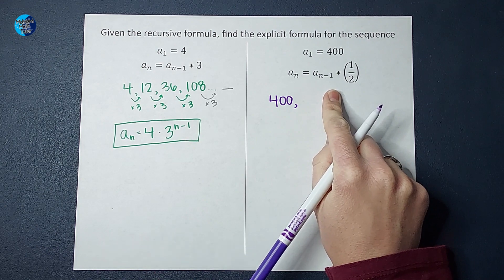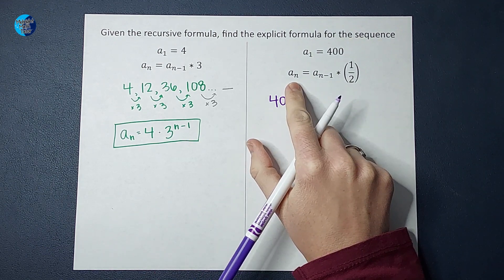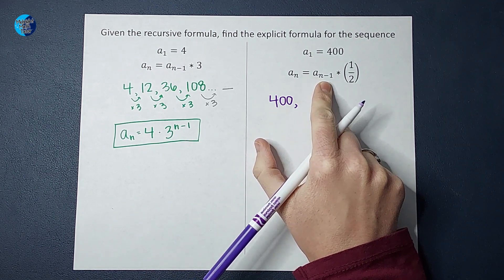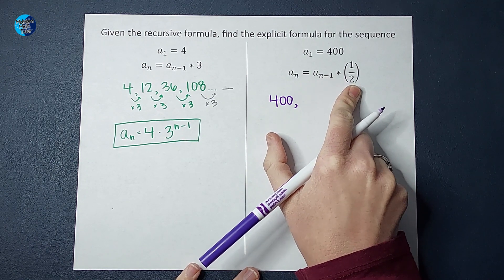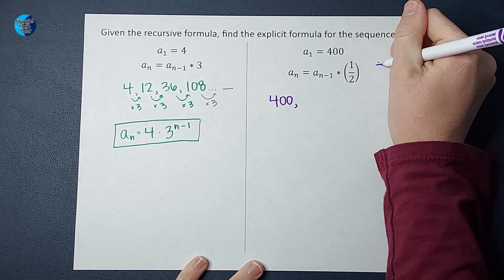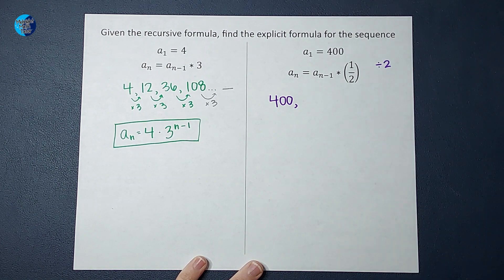And then this formula tells me what to do. Whatever number I want to find, take the one before it, multiply it by one half. Or you can also think of this as dividing by two. It really means the same thing.